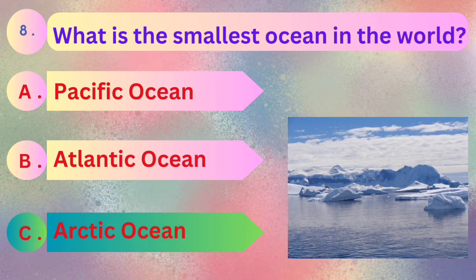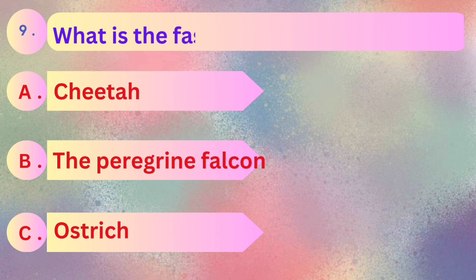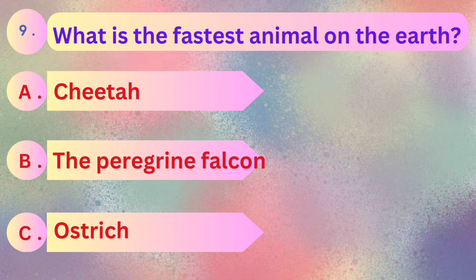Answer is Arctic Ocean. And next question: what is the fastest animal on the earth? Cheetah, the peregrine falcon, and ostrich.